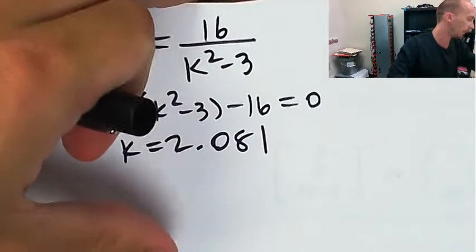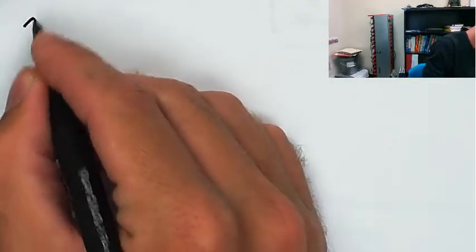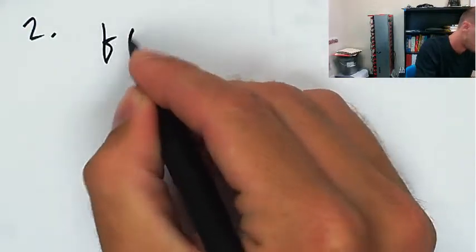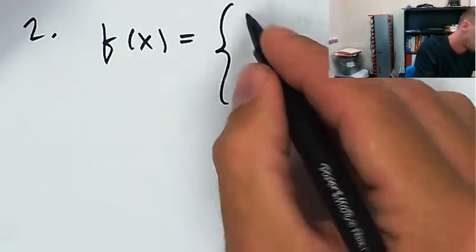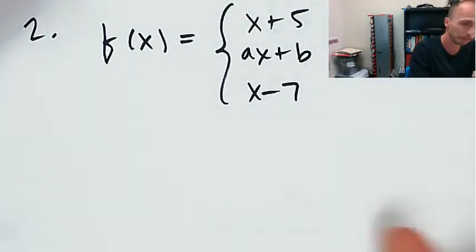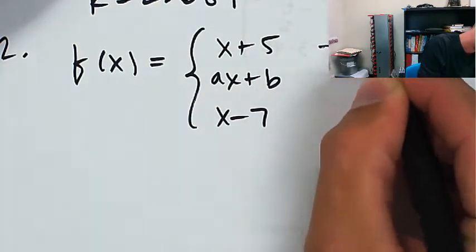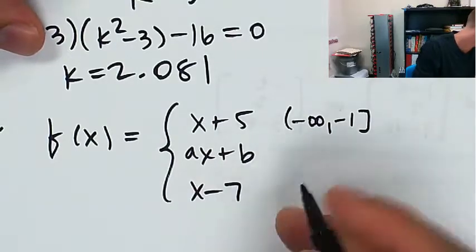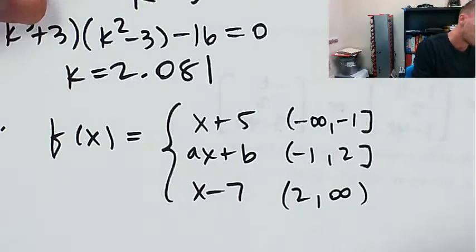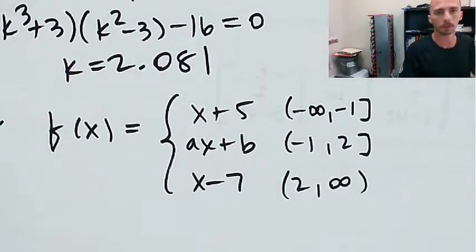The second one, find the values of a and b that make the function continuous. f of x is equal to x plus 5, ax plus b, and x minus 7. The domains are negative infinity to negative 1, negative 1 to 2, and 2 to infinity. So we just need to set these two equal to each other and plug in negative 1. We need to set these two equal to each other and plug in 2, and then we'll just solve the system.